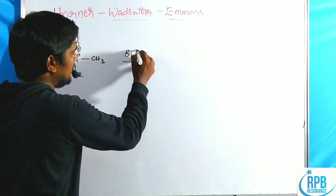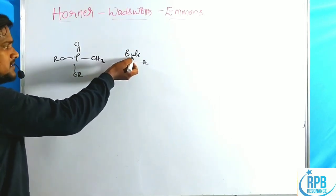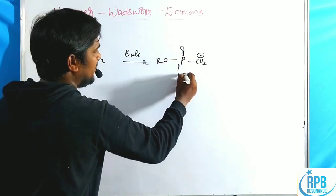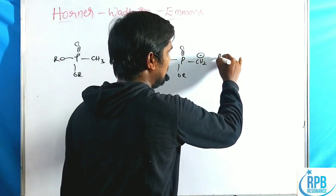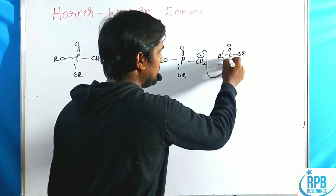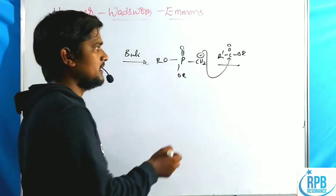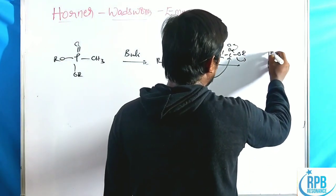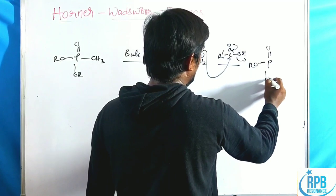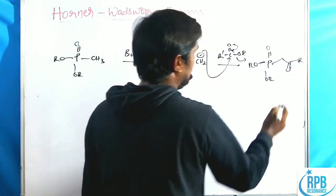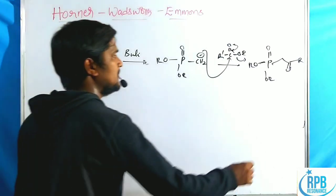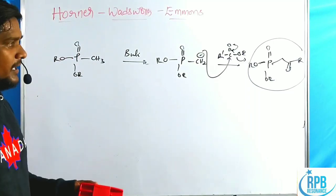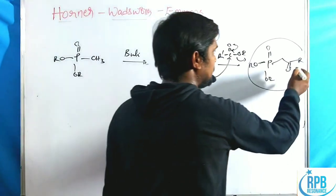We prepare alpha-keto phosphonates from alkyl phosphonates by treating with n-BuLi — a strong base. In the presence of a strong base, it creates a negative charge on the carbon atom, which is the nucleophile. This nucleophile attacks the electrophilic center of an ester (R-COOR). The carbonyl becomes O minus, which returns electrons back, OR is eliminated, giving P=O, OR, OR with a keto ester. This is the best method for alpha-keto phosphonates.